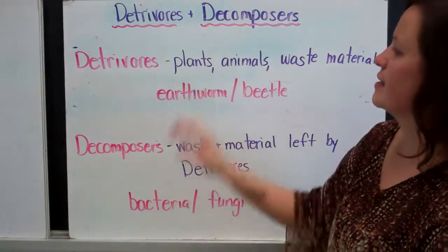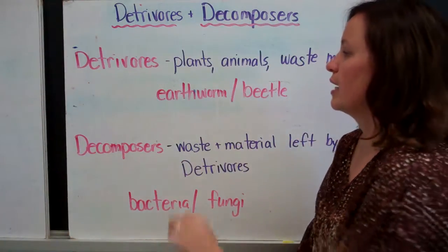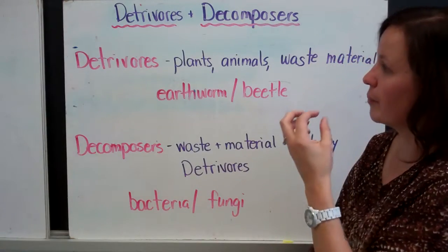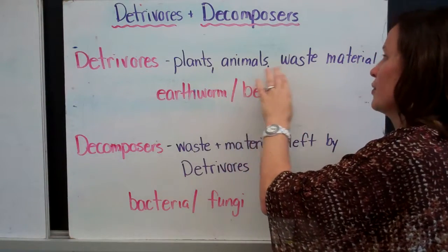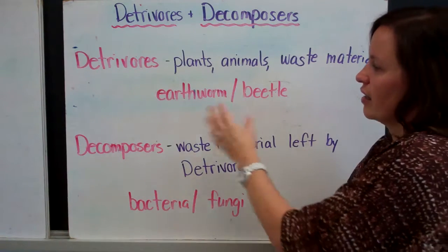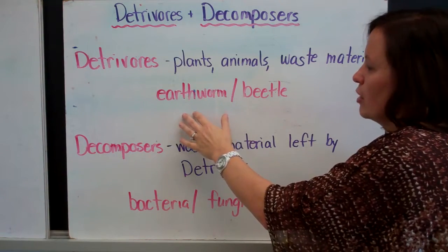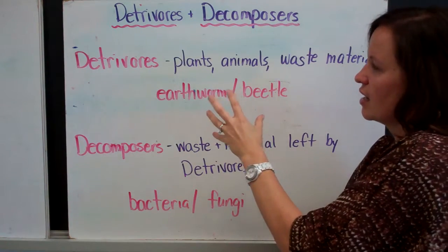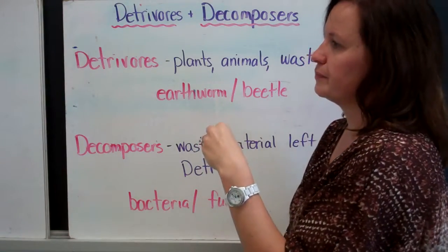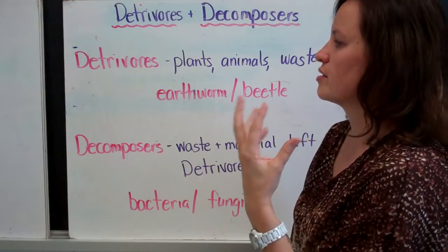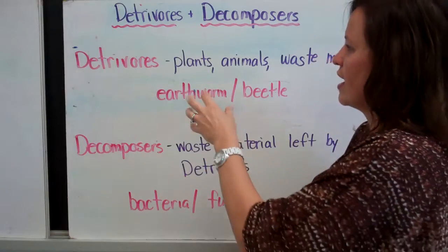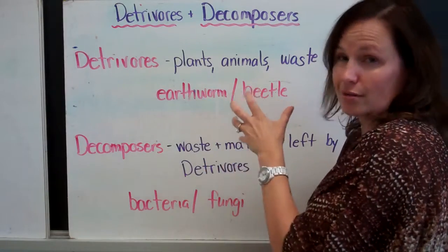Detritivores and decomposers. Detritivores get their energy from dead plants, dead animals, and waste material. Examples of those would be earthworms or beetles. They go in after the herbivores, omnivores, and scavengers have gone through, and they eat what's left.